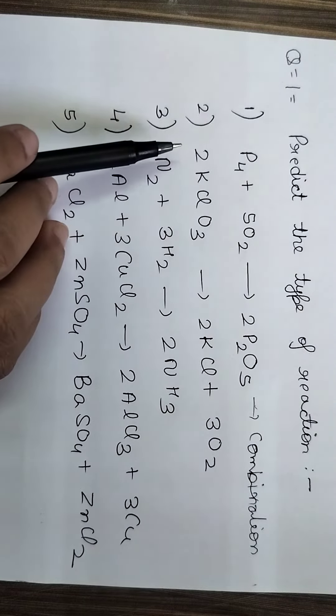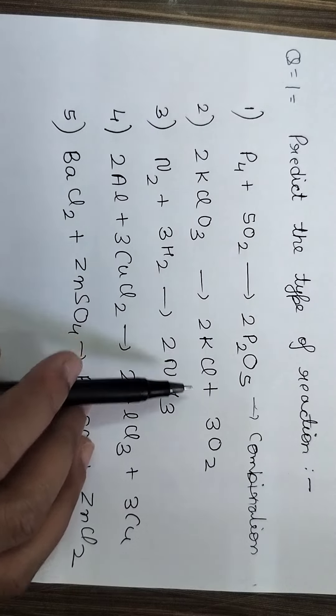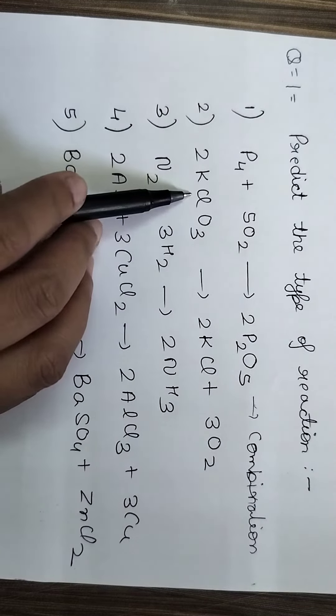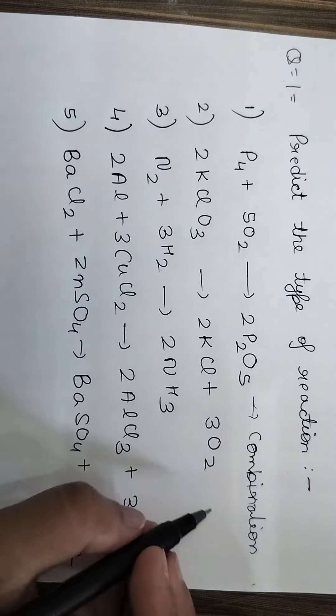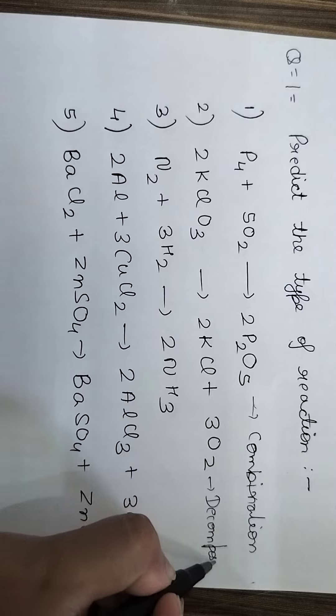In the next one, 2KClO3 gives rise to 2KCl plus 3O2. Here you can see the reactant is one, products are two. So this will be a decomposition reaction.